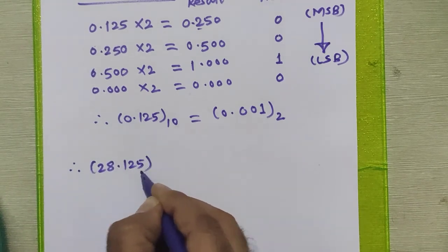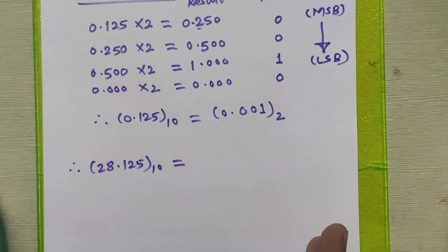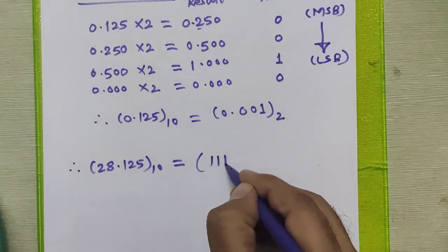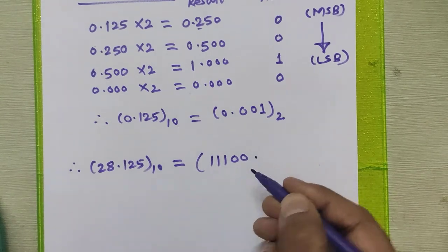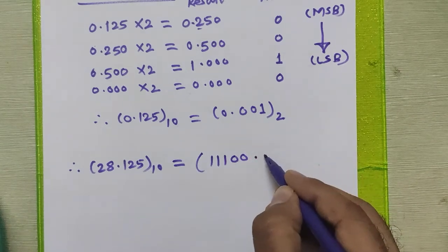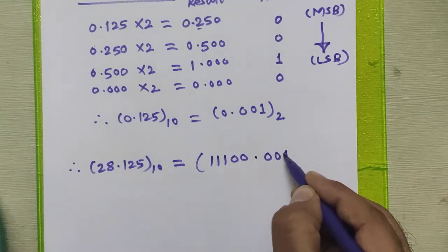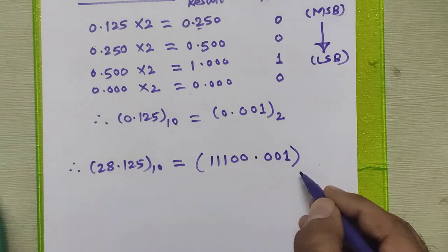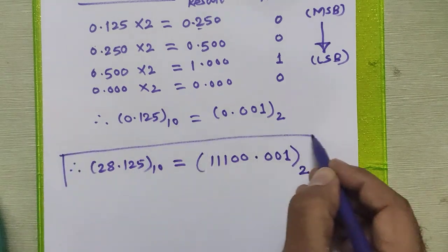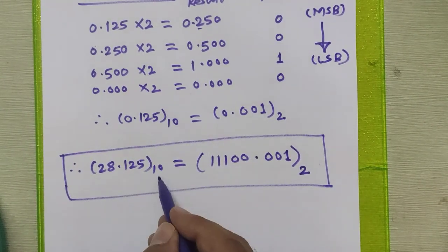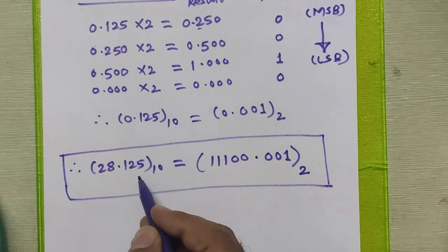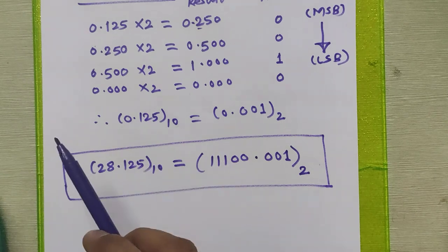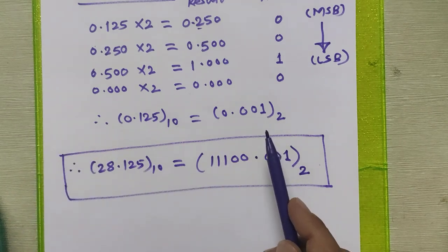To get the actual result for the given number 28.125 in decimal, we combine the results of both sections — integral part and fractional part. The integral part result was 11100, and the fractional part result was 0.001, placed after the decimal point. So we combine them to get our final binary equivalent. We have seen how to convert the integral part and fractional part separately, and then merge both results to get the complete binary equivalent.